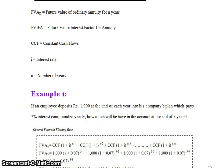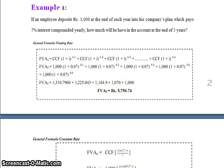We can apply all three formulas to the same problem to verify they yield the same answer. Example 1: If an employee deposits ₹1,000 at the end of each year into his company's plan, which pays 7% interest compounded yearly, how much will he have in the account at the end of 5 years?